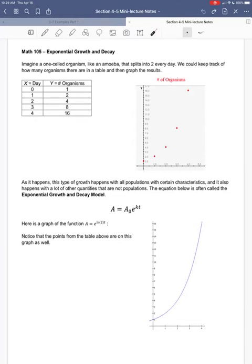In this mini-lecture, I'm going to talk a little bit about exponential growth and decay. To start with, we can think of a one-celled organism. Many one-celled organisms reproduce by splitting in two, so that one organism splits into two and becomes two organisms after a certain period of time.